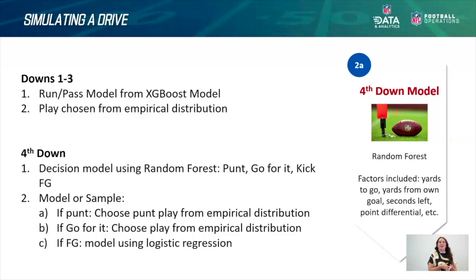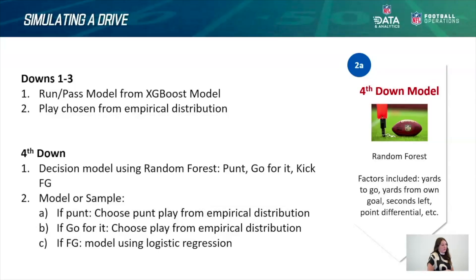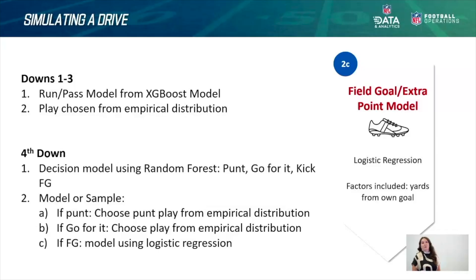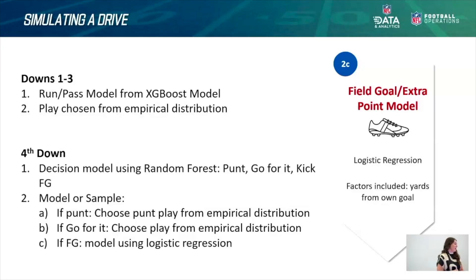In the fourth quarter with a tie game, teams may be more prone to go for it on fourth down. Those probabilities based on field position and time left feed into a random forest model. If there's a punt, you choose from punt plays based on field position in an empirical distribution. If they go for it, you sample from scrimmage plays. For field goals, we created a logistic regression model — our field goal and extra point model — which is purely a function of yards from own goal. Kickers hit an 84% make rate in 2024, and this simple model got us exactly where we needed in field goal attempt make rate.